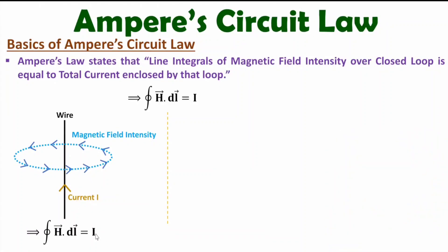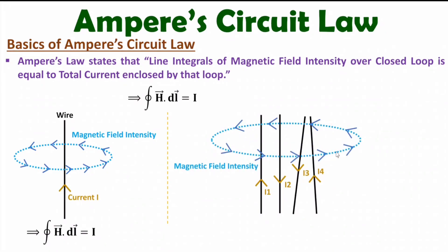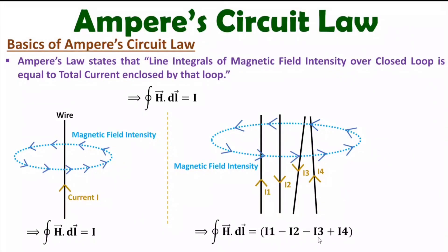Now let me increase the complexity. I will consider four different wires. Wire one and wire four are having current in the upward direction, and wire two and wire three are having current in the downward direction. If the magnetic field intensity is rotating in a particular direction, then as per the right-hand thumb rule, the resultant current should be in the upward direction. So the line integral of magnetic field intensity equals the resultant current: upward currents I1 and I4 are positive, and opposite-direction currents I2 and I3 are negative. So total current enclosed by the given loop can be identified using the line integral of magnetic field intensity as per Ampere's Circuit Law.